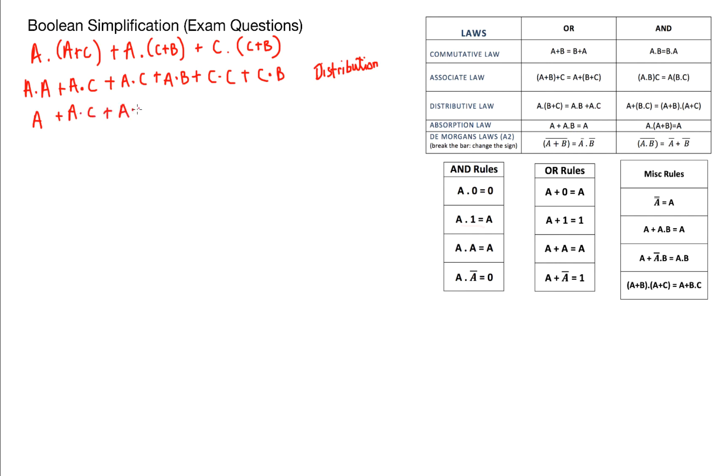And I know from my anding rules that A and A is just A and C and C is just C. And in the next step I've noticed that I've got A and C OR A and C so I can just say that I've got A and C. In the next step then I can use the law of absorption to say A OR A and C is just A and that leaves me with the rest of my terms.